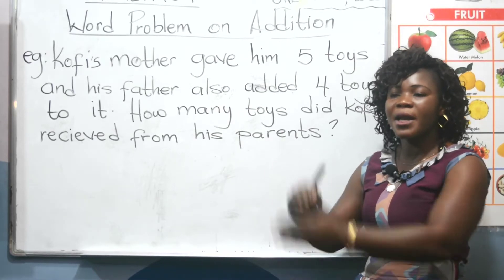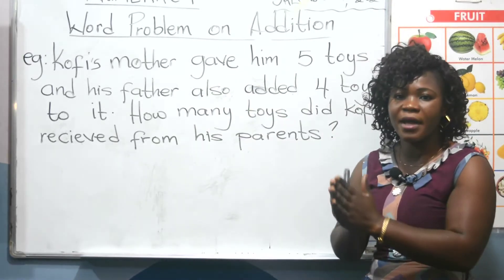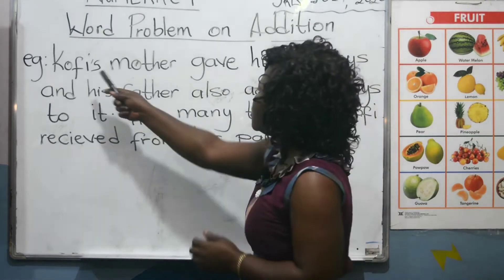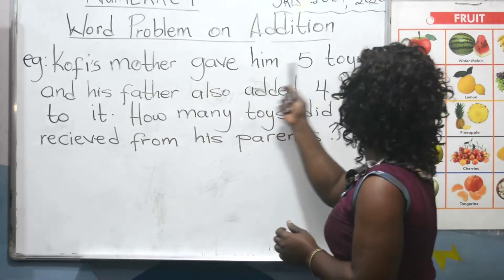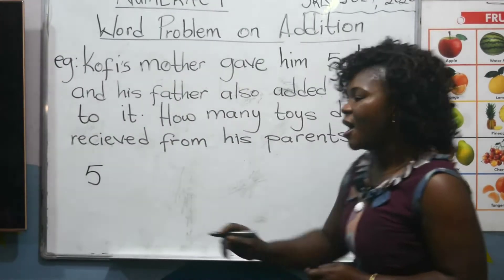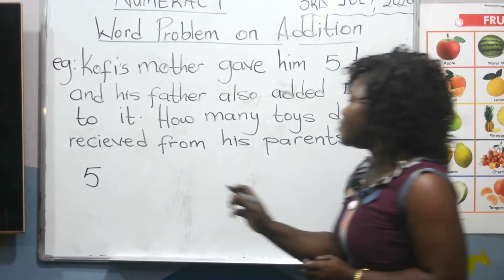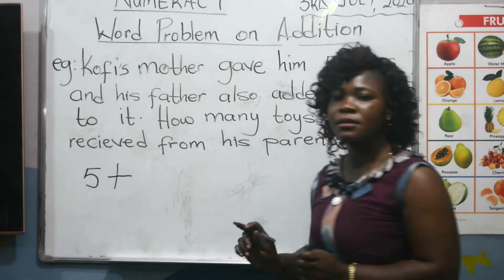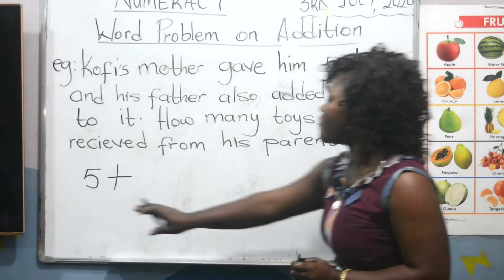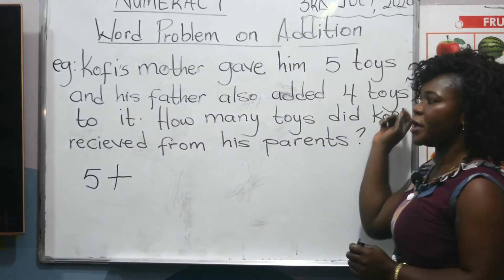How many did the mother give? How many did the father also give? Then we put together to find the sum Kofi is having now. So first of all, look at the first sentence: Kofi's mother gave him five toys. We write our five down. That's our five. Don't forget the addition sign — write our addition sign, plus. So five plus, and his father also added four toys to it.